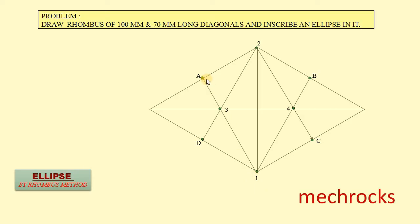We take 1 to A as the radius, 1 as center. Draw an arc from A to B like this.